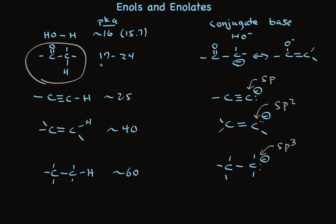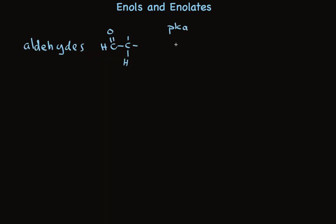Let's take a look at this pKa range here of 17 to 24, which, after all, is large. It's 10 to the 7. The pKa of aldehyde alpha hydrogens is about 17.